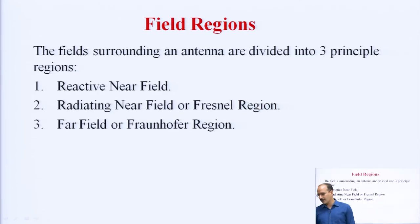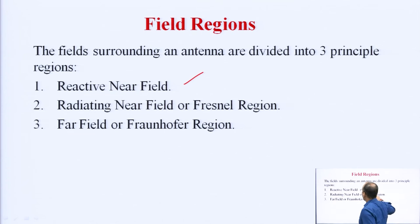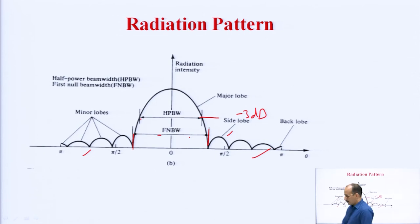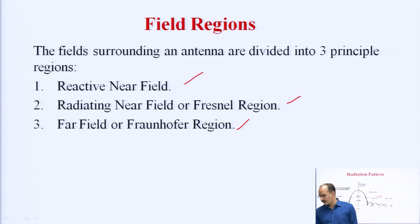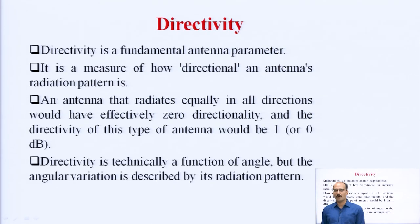That is about the radiation pattern. Then, as far as the field region of the antenna is concerned, basically there are 3 regions: first, the reactive near field; second, the radiating near field or Fresnel region; and third, the far field or Fraunhofer region. You can see that this is the near field, this is the far field, and this is the middle one — the radiating near field. So ye sare ke sare field regions hain, and then we move to directivity.